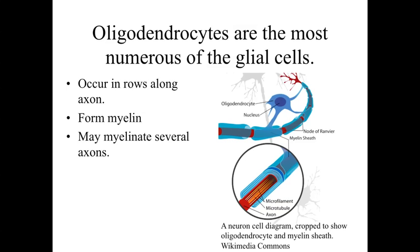The second glial cell type within the central nervous system are the oligodendrocytes, which are the most numerous of the glial cells. They have many processes that come out and interact with axons, occurring in rows along the axon. Their processes go out and wrap around the axon, forming myelin — and a single oligodendrocyte can myelinate several nearby axons by wrapping its cell membrane around them in multiple layers.